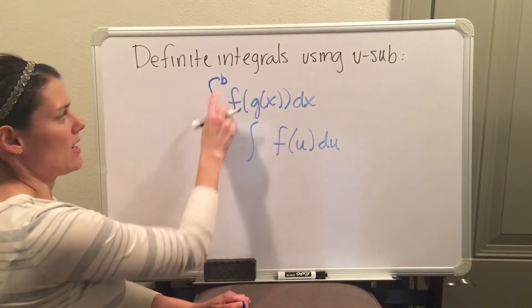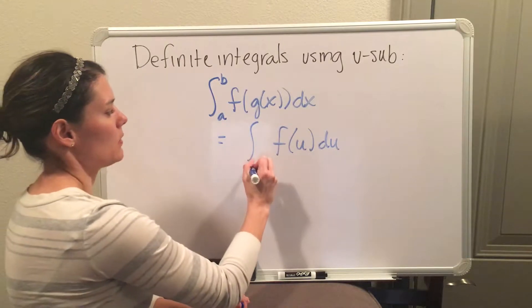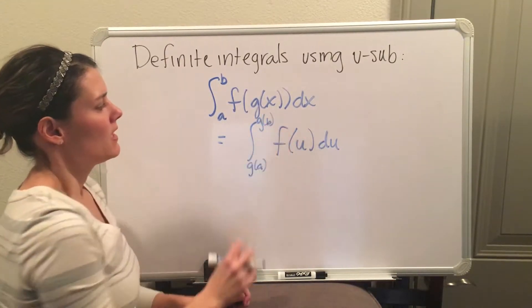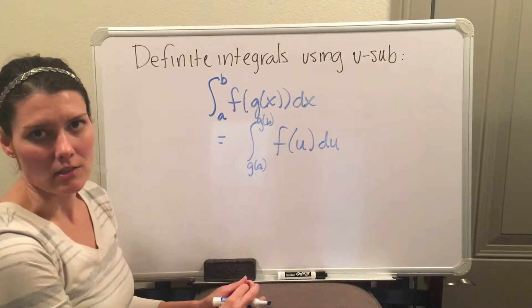You also have to change the a and b as well, and so we can say that's g of a to g of b. It's very important that you remember to change your interval as well.